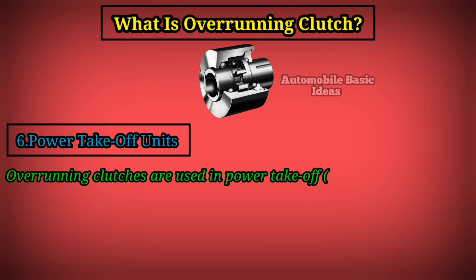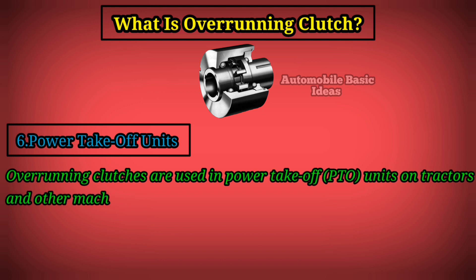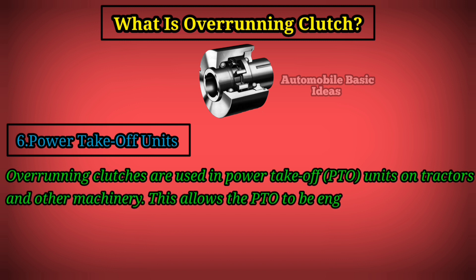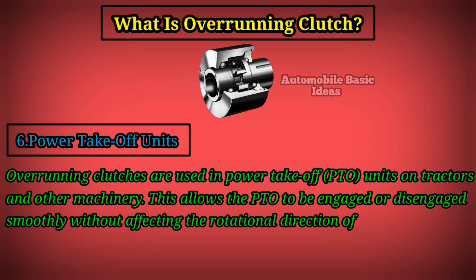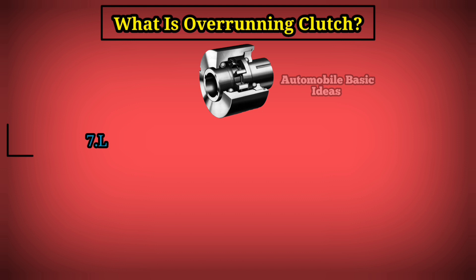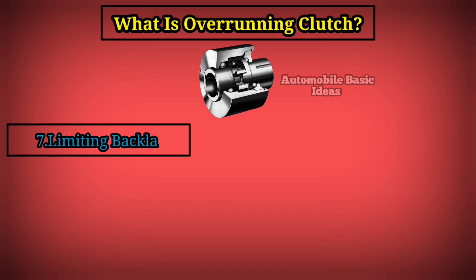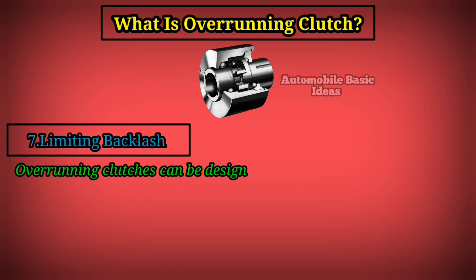Six, power takeoff units. Overrunning clutches are used in power takeoff (PTO) units on tractors and other machinery. This allows the PTO to be engaged or disengaged smoothly without affecting the rotational direction of the attached implement.